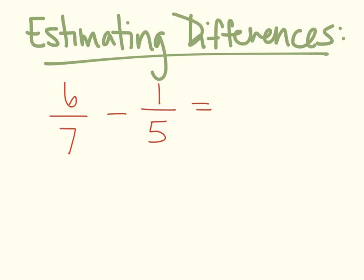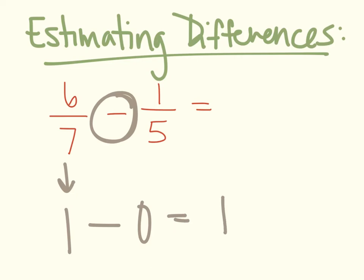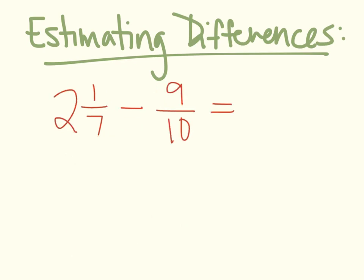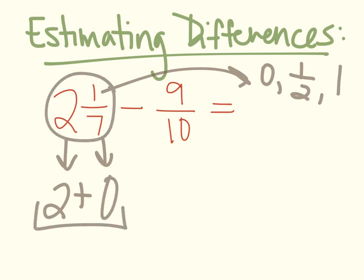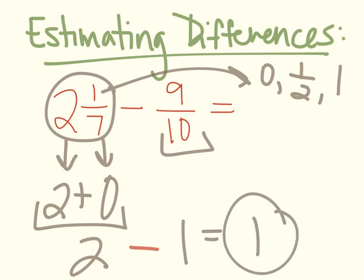The same process applies to estimating differences, except now you are subtracting — please make sure you pay attention to that subtraction sign. So 6 sevenths estimates to 1 whole, 1 fifth is closer to 0, and 1 minus 0 gives an estimated difference of 1 whole. With mixed numbers: we keep the 2, 1 seventh estimates to 0, so those combine to 2. Then 9 tenths estimates to 1. So we have 2 minus 1, which gives us an estimated difference of 1.